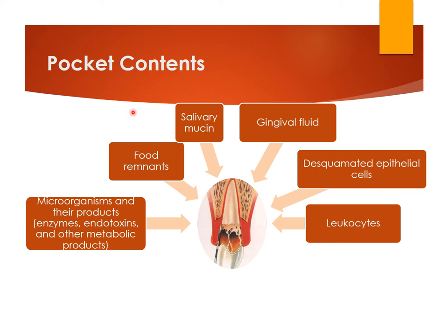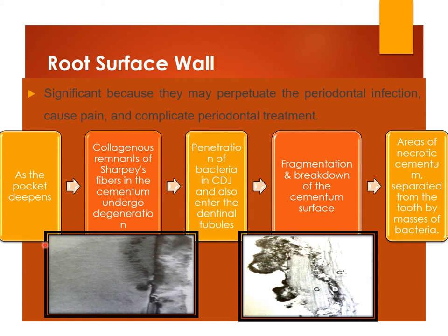Pocket contents consist of salivary mucins, gingival fluid, desquamated epithelial cells, leukocytes, microorganisms and their products such as enzymes and endotoxins, and food remnants. The root surface wall of the periodontal pocket is also significant because it may perpetuate the periodontal infection, cause pain, and complicate treatment. As the pocket deepens, there is degeneration of Sharpey's fibers in the cementum, leading to bacterial penetration at the cemento-dentinal junction and into dentinal tubules, fragmentation and breakdown of the cementum surface, and areas of necrotic cementum separated from the tooth by masses of bacteria.